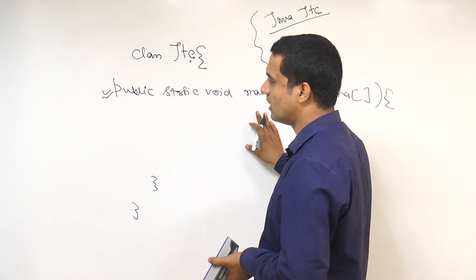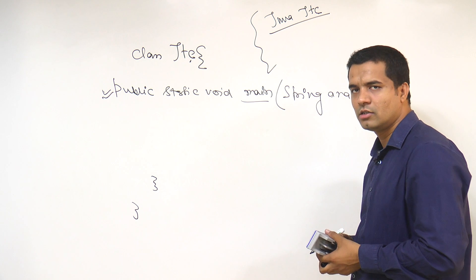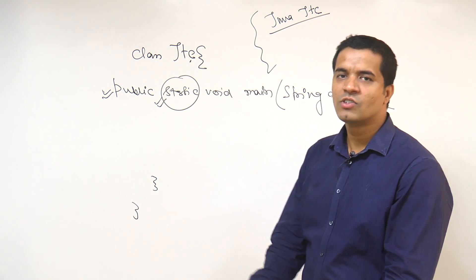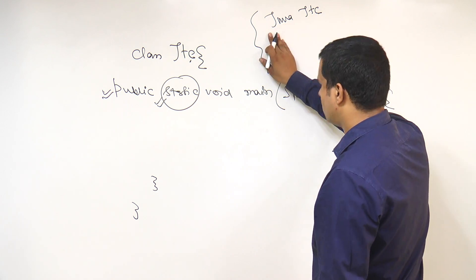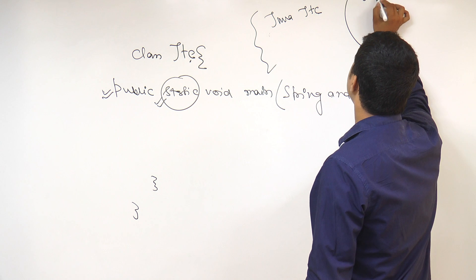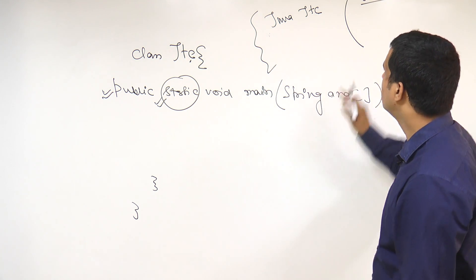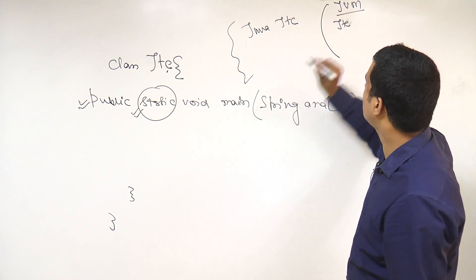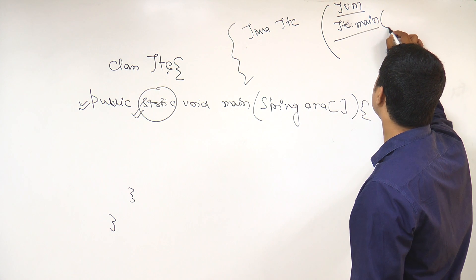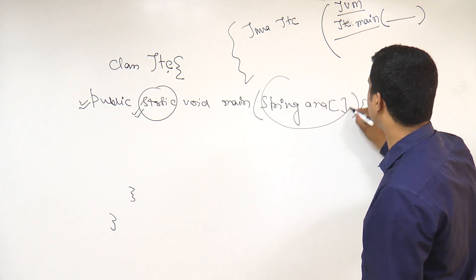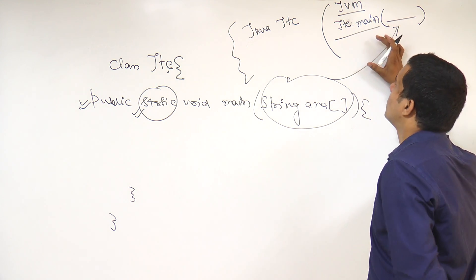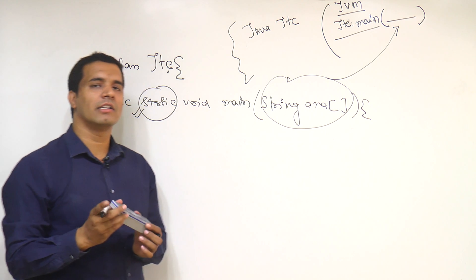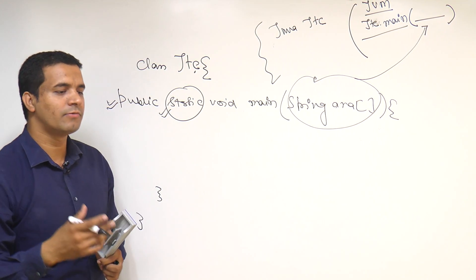This main method is a static method. So internally the JVM can call it as JTC.main() — by the class name, since it is static. The JVM calls the main method and passes a String as a parameter in order to call and process it. The strings and other things are being processed, it is being called, and then further processing is done.